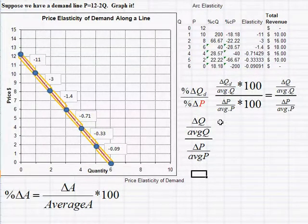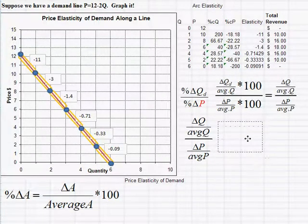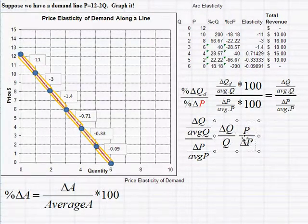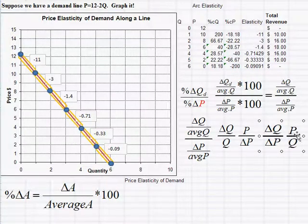We have a fraction divided by a fraction, so we invert and multiply. Getting rid of the word 'average,' this gives us: change in quantity divided by quantity, times price over change in price. Rearranging, that becomes change in quantity divided by change in price, times price over quantity. We got rid of the average because this allows us to look at just one price and one quantity at a time — this is the point elasticity formula.